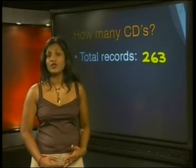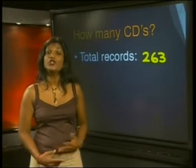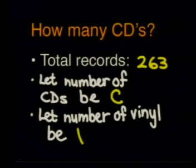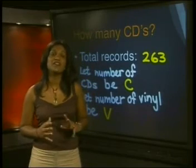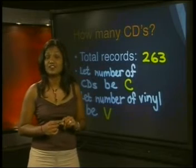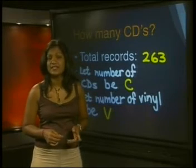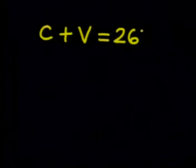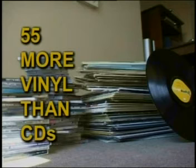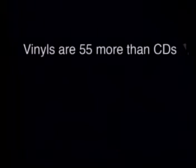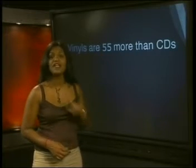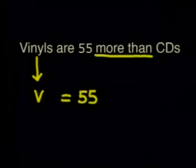It might help to write down everything we know in a simpler way. We don't know the actual number of vinyl and CDs — we only know there is more vinyl than CDs. It helps to give the unknown number of CDs a letter symbol and the unknown number of vinyl another letter symbol. How about letting the number of CDs be C, and the number of vinyl be V? Now, let's see if we can find some mathematical relationships between these unknowns. We can say that C plus V is equal to 263. The information also tells us that the collection contains 55 more vinyl than CDs, so V is equal to 55 plus C.